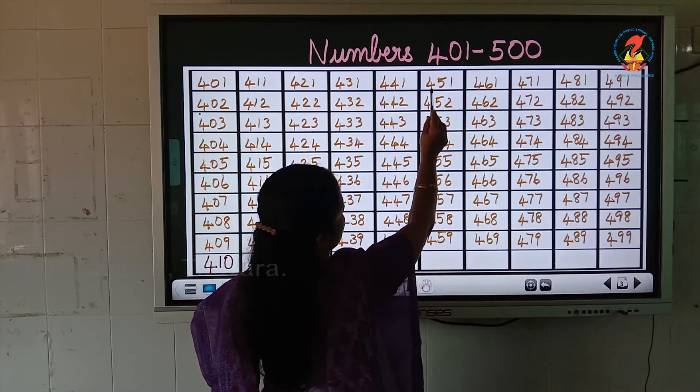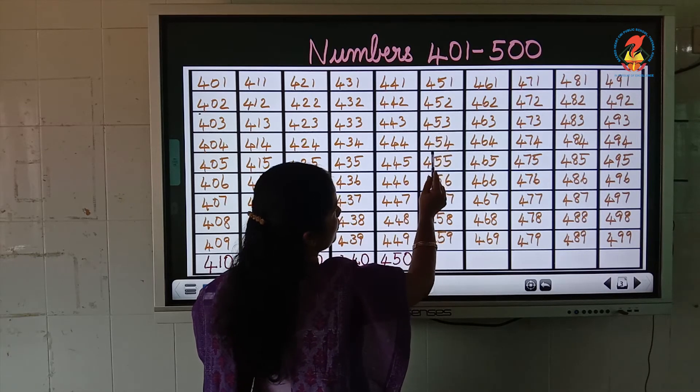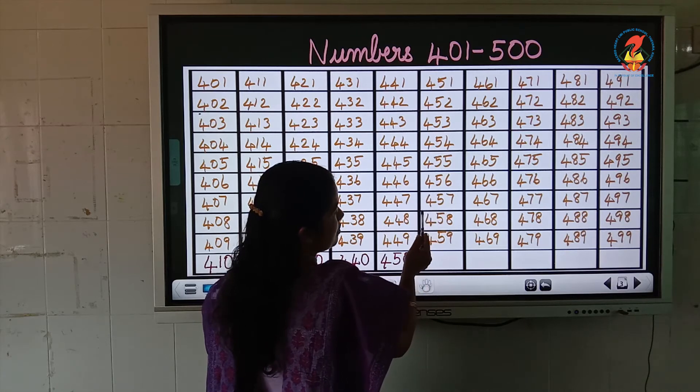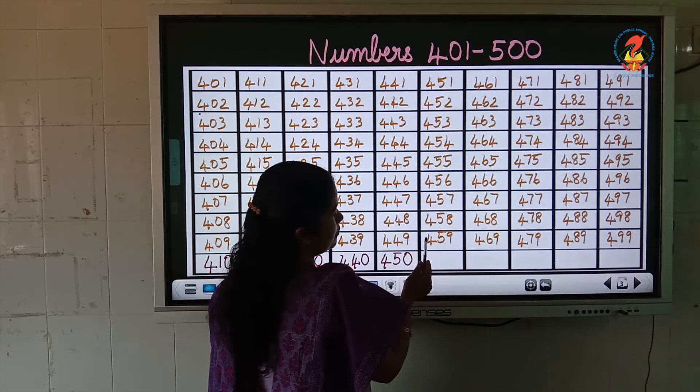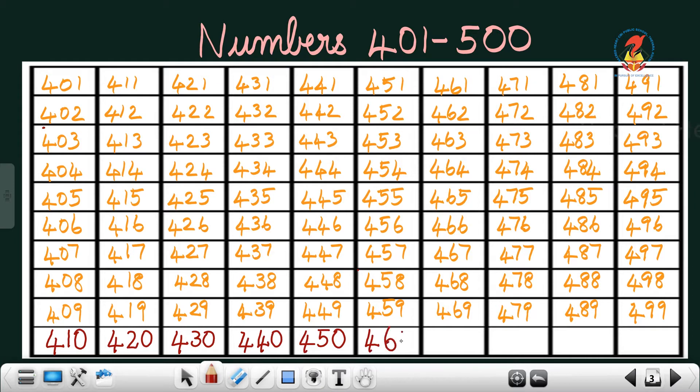Then 451, 452, 453, 454, 455, 456, 457, 458, 459, 460.